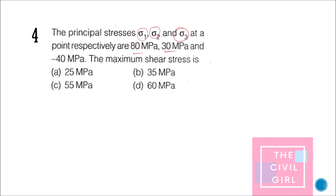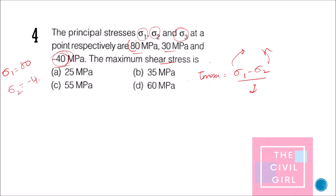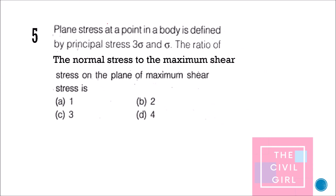Question 4: The principal stresses sigma 1, sigma 2, and sigma 3 at a point are 80, 30, and minus 40 MPa respectively — find the maximum shear stress. Tau max uses the maximum and minimum principal stresses: sigma 1 = 80 MPa (maximum) and sigma 2 = minus 40 MPa (minimum). Substituting gives tau max = (80 minus (minus 40)) / 2 = 60 MPa — option D.